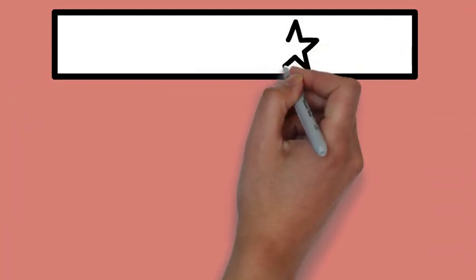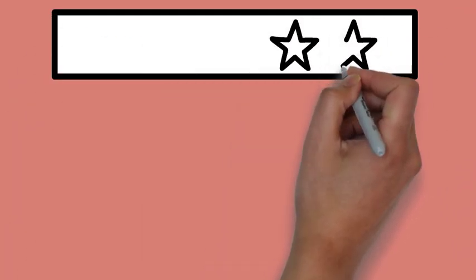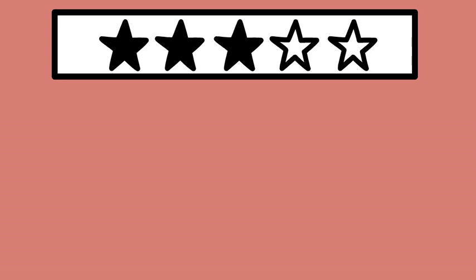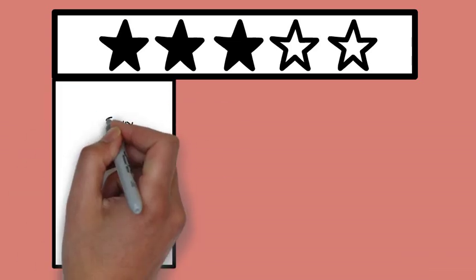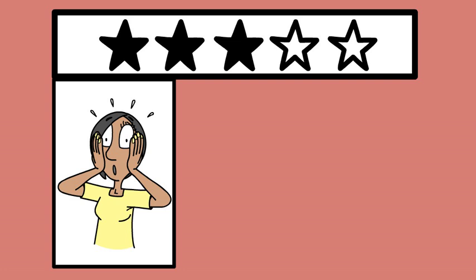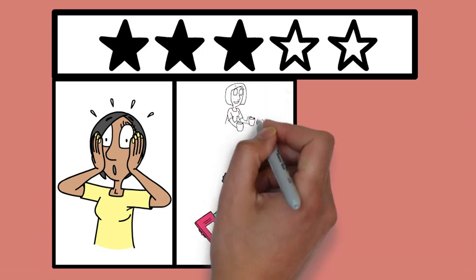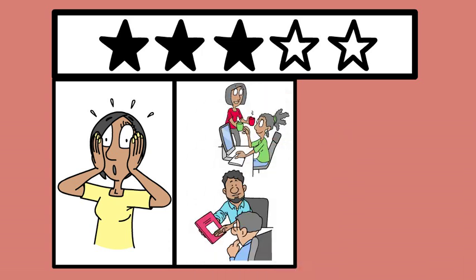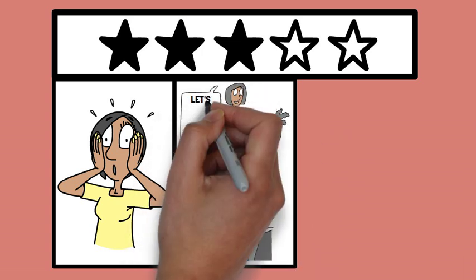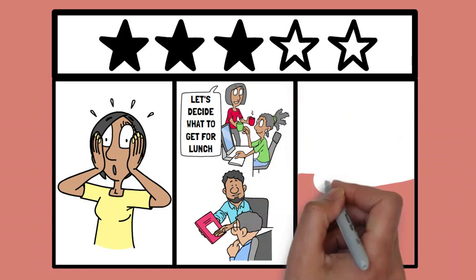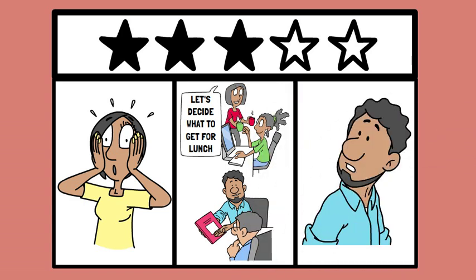Treisman's theory accounts for variations in attention by suggesting that the level of processing can be based on relevance and significance — information that is more relevant or surprising can break through attenuation more effectively. For example, you might focus on writing a report, but if someone starts talking about a topic you're passionate about, the attenuator allows you to shift your attention because the topic is more relevant to you, even though it was initially in the background.